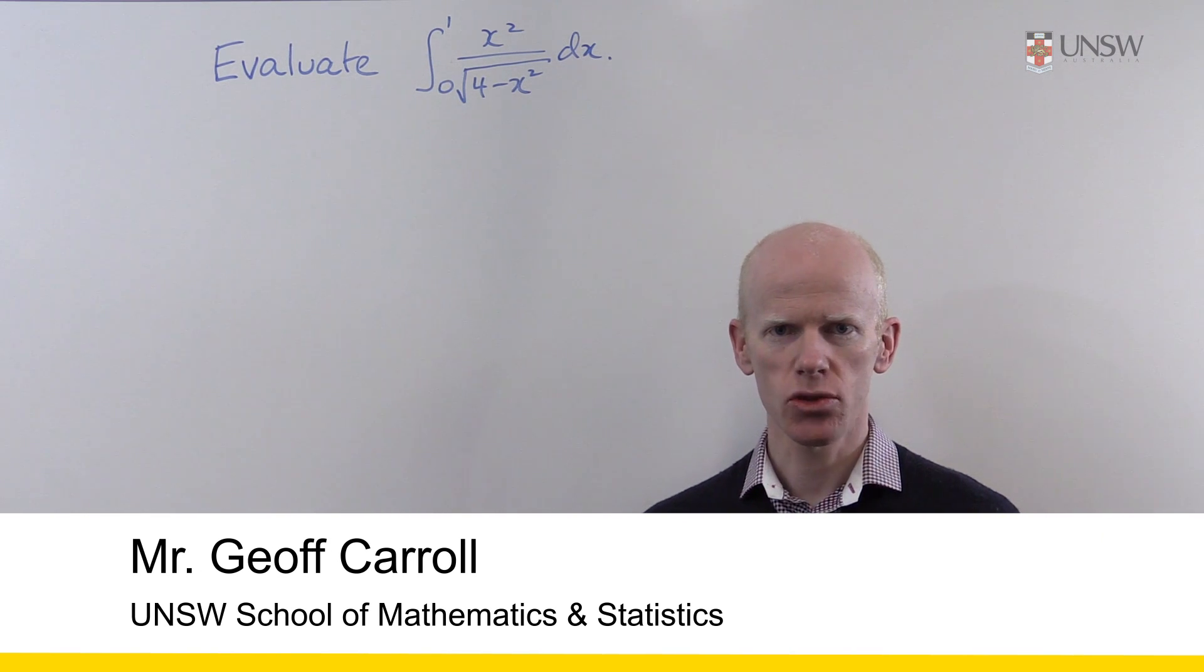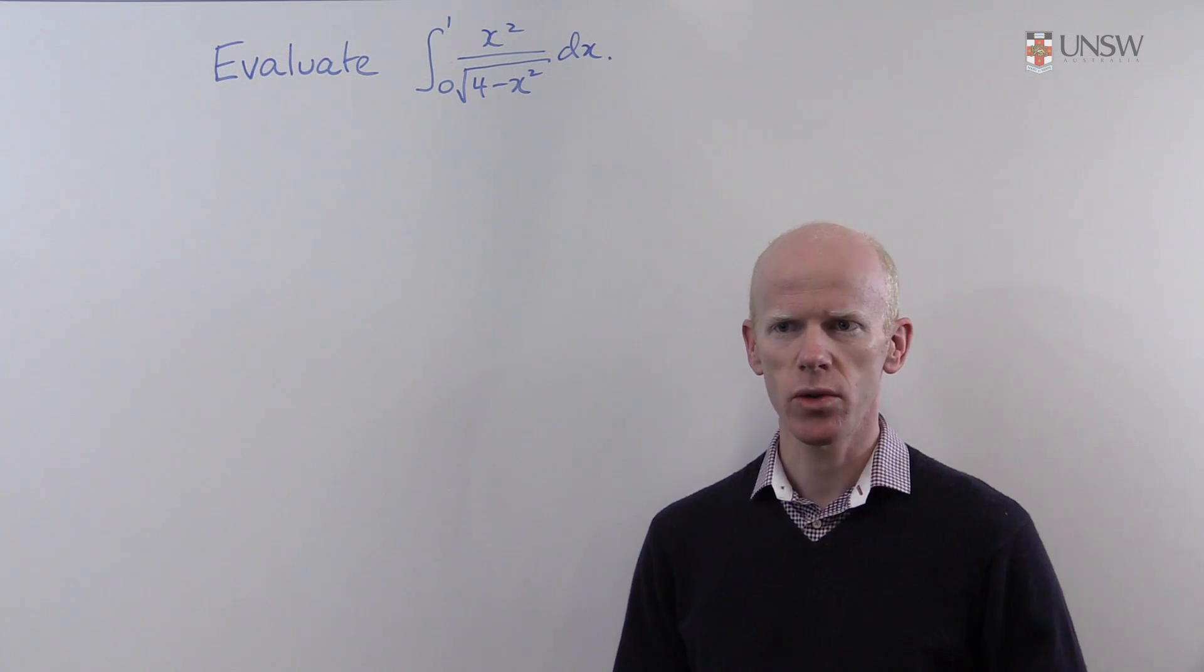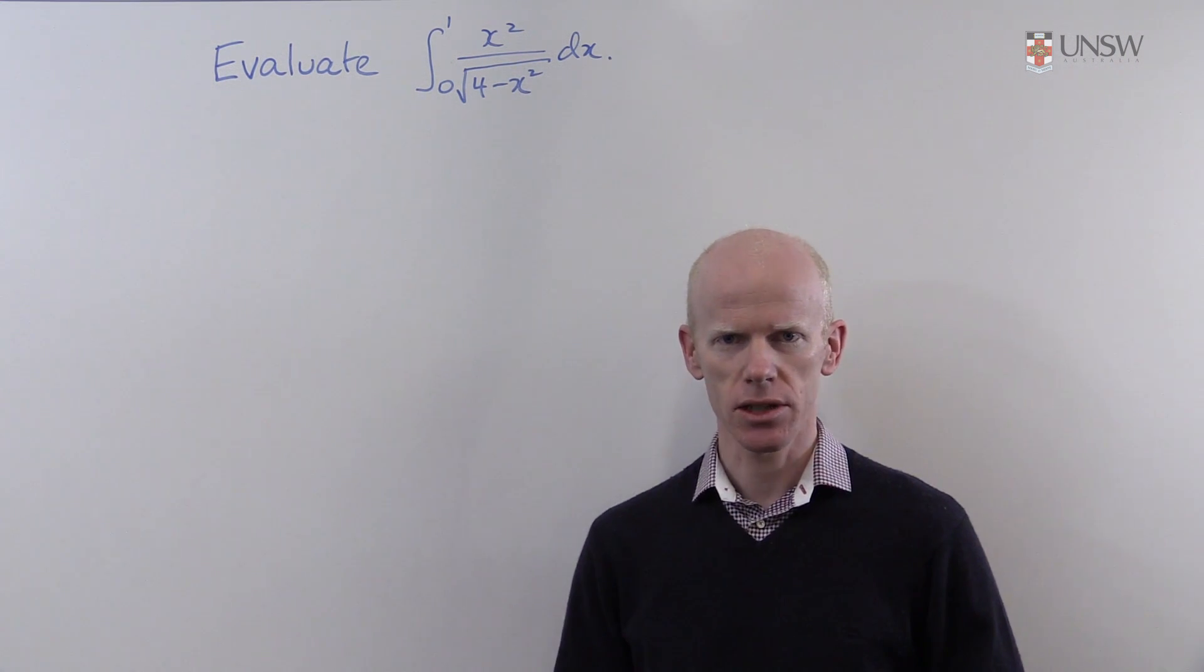Hello, this question asks us to integrate the function x² over √(4 - x²) from x equals 0 to x equals 1.